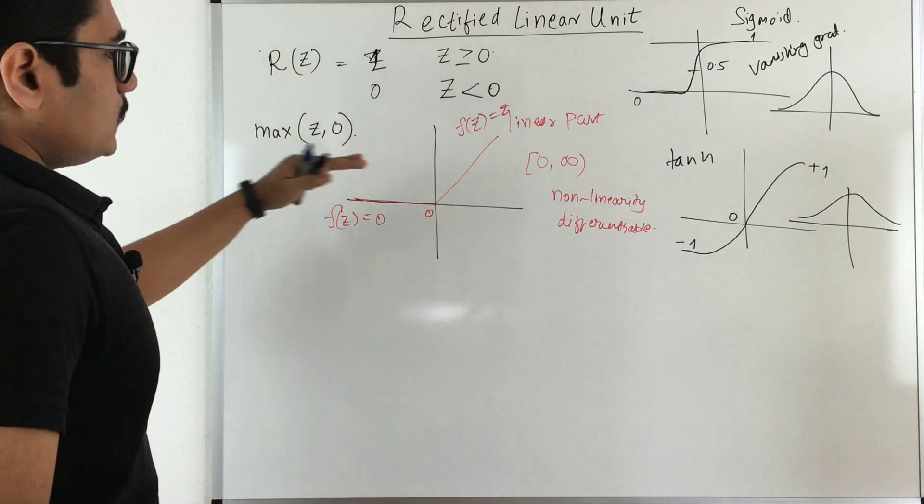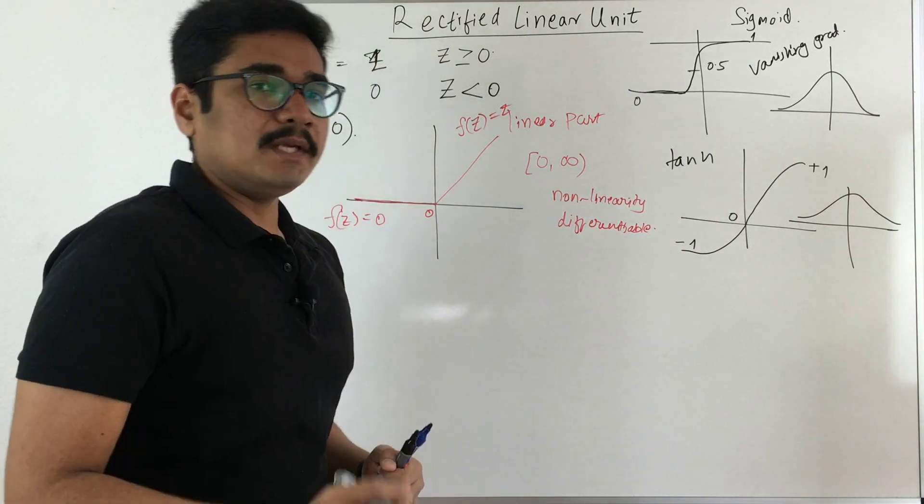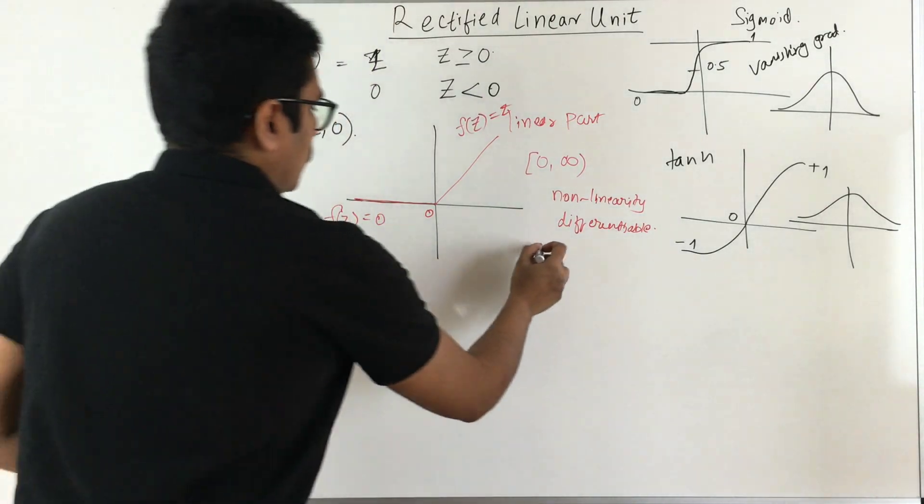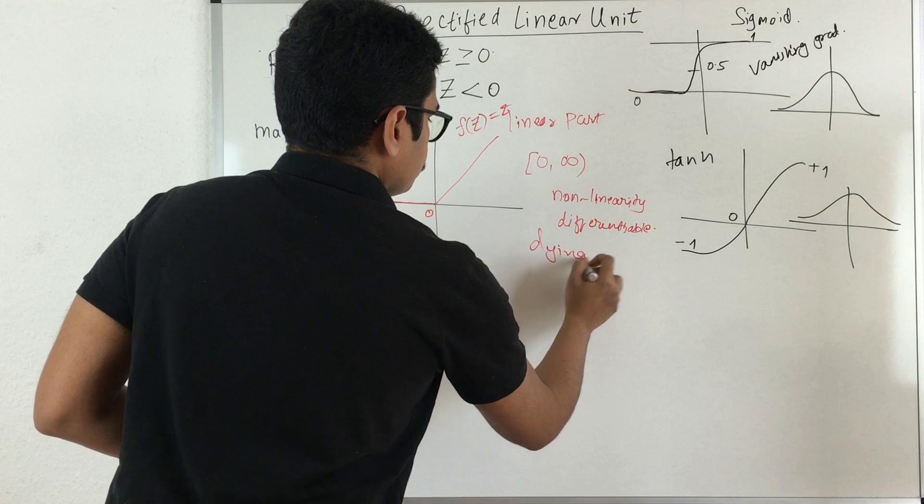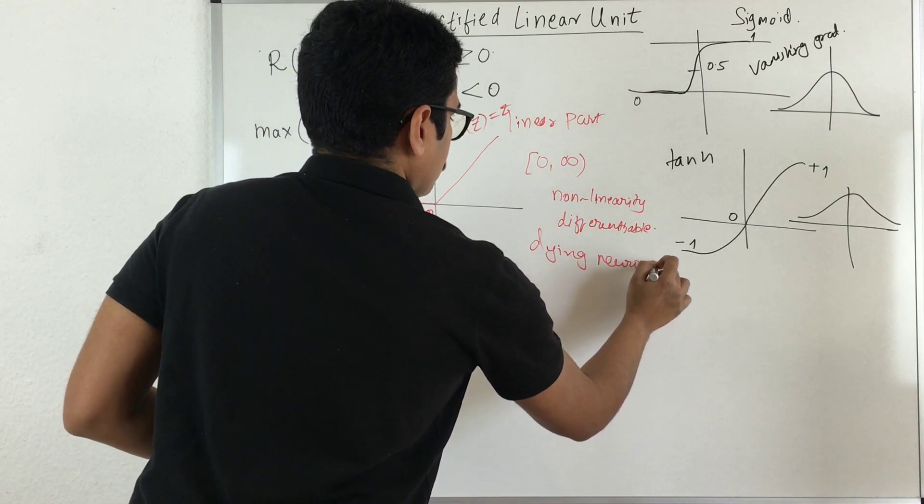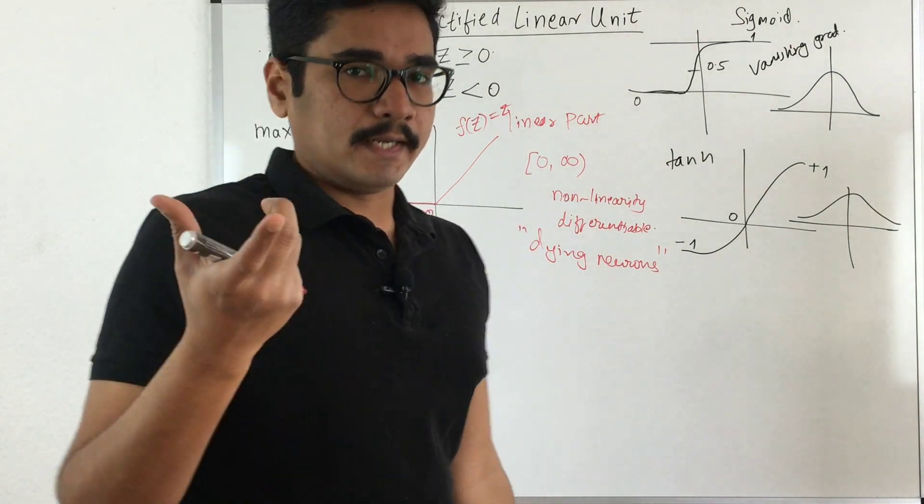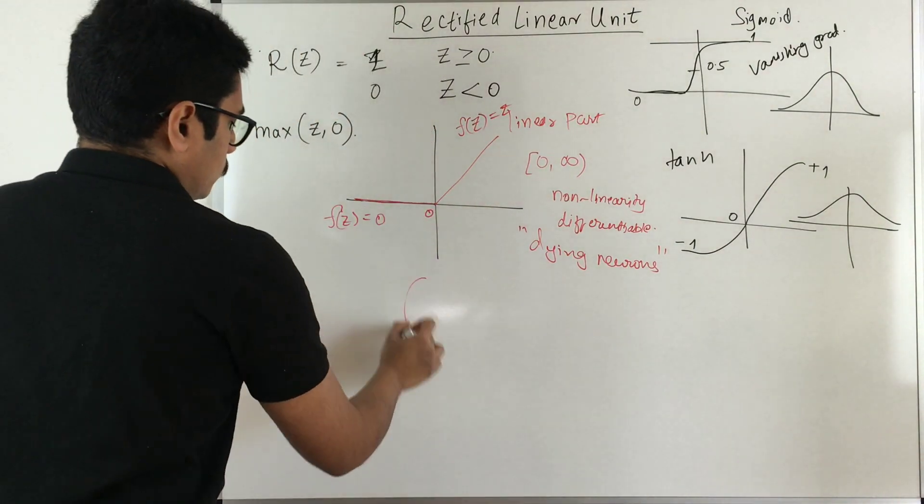But this particular ReLU has got one major disadvantage. So that is the problem of dying neuron. Yes, you heard it right, that is dying neurons, means you can consider brain dead.